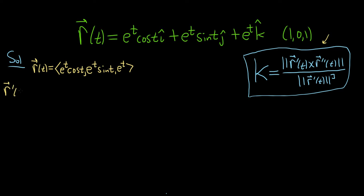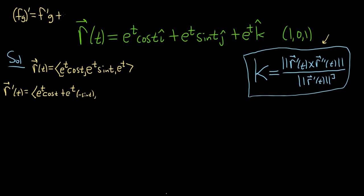So r prime of t — we're going to use the product rule here. The product rule says we take the derivative of the first, which is e to the t, times the second, plus the first, e to the t, times the derivative of cosine, which is negative sine t. As a refresher: derivative of first times second, plus first times derivative of second.